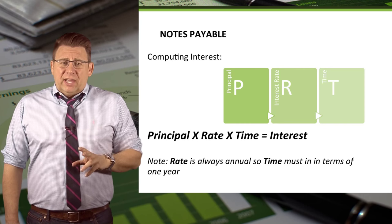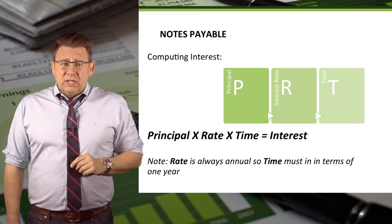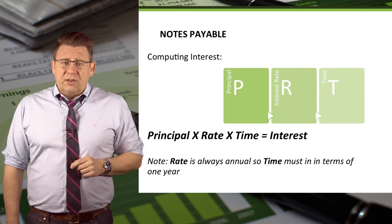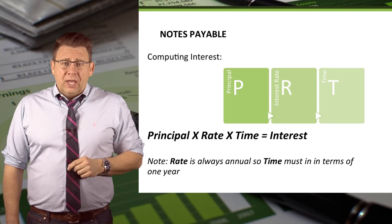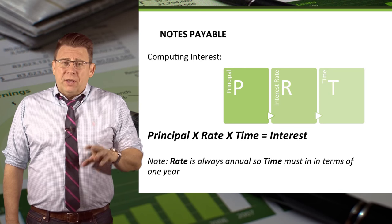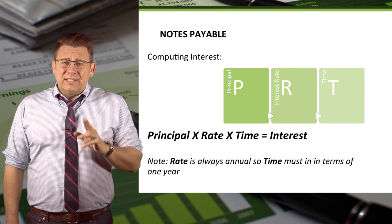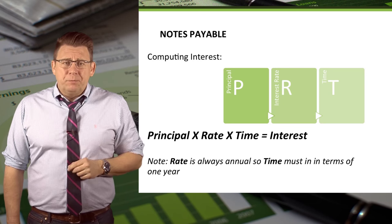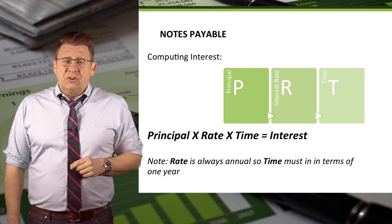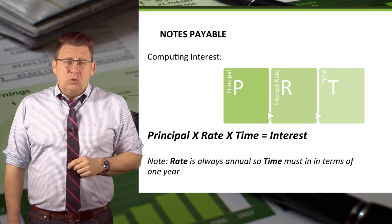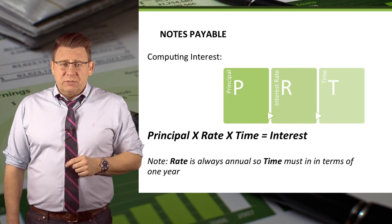Interest is calculated by taking the principal of the note, times the annual interest rate of the note, times the term of the note. I remember this with the acronym PERT: principal times rate times time. Make sure to remember that interest is always stated in terms of an annual rate, so time must also be in terms of one year.